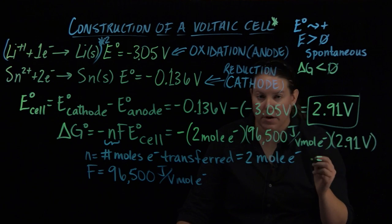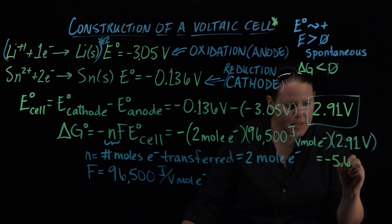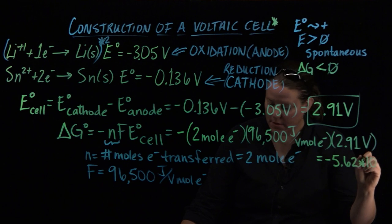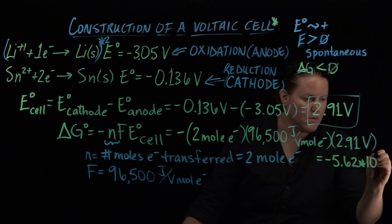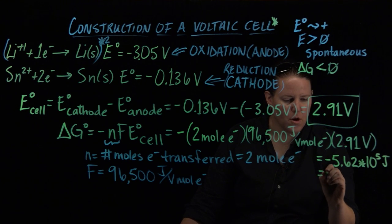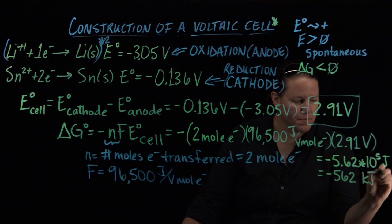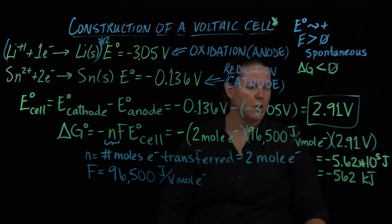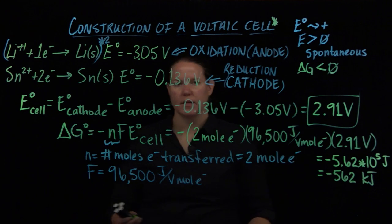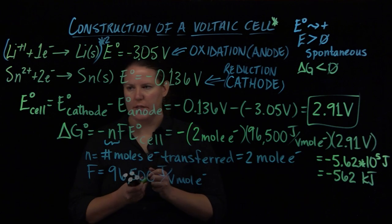How many sig figs should I have here? Probably three. Three for the cell potential because Faraday's constant is not going to count, two moles is not going to count. So three significant figures. Let's go ahead and put this in kilojoules. You could either put negative 5.62 times 10 to the fifth joules, or you could put negative 562 kilojoules. Pretty spontaneous reaction. That's pretty cool.